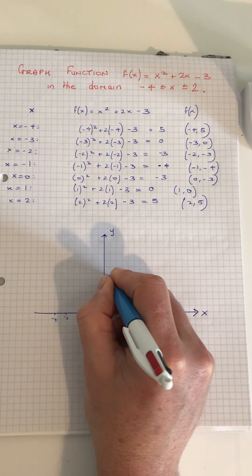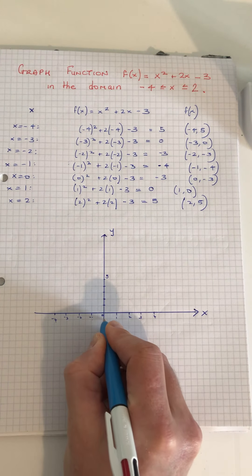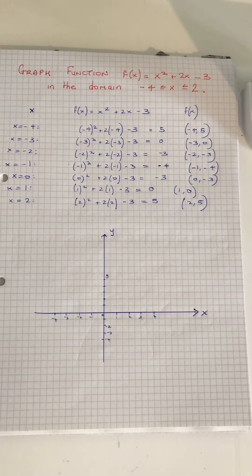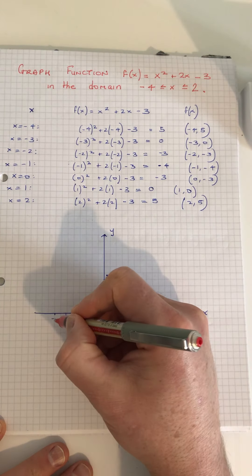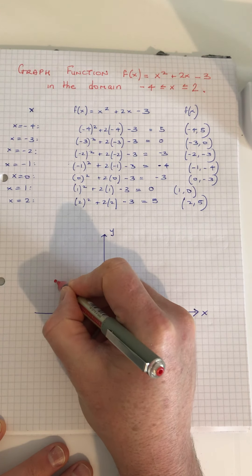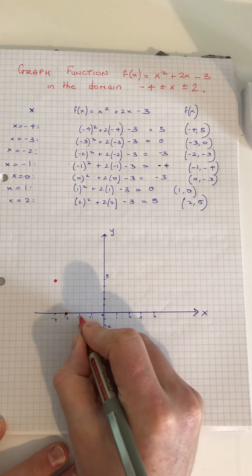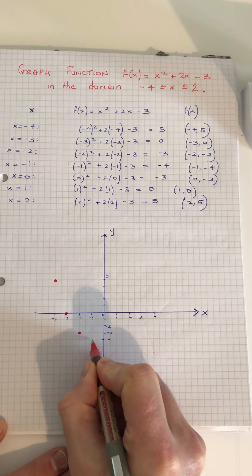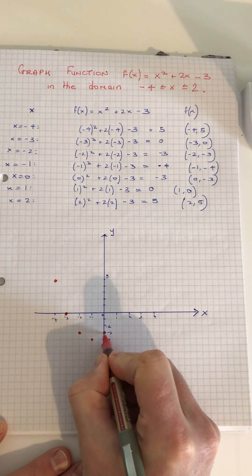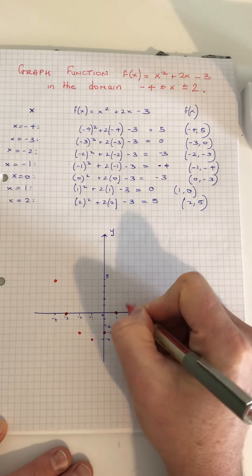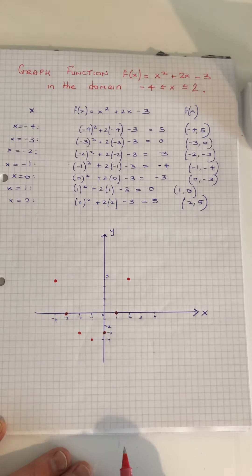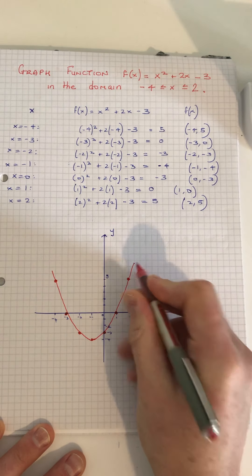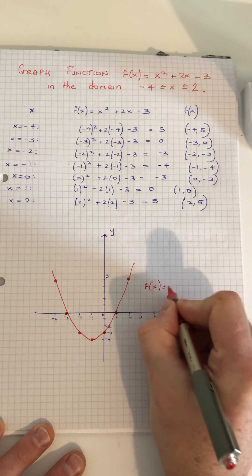On the y axis: 1, 2, 3, 4, 5 and then the negatives: minus 1, minus 2, minus 3, minus 4. Now we plot the points: (-4, 5), (-3, 0), (-2, -3), (-1, -4), (0, -3), (1, 0), and (2, 5). We must join these dots to form a smooth curve like so.